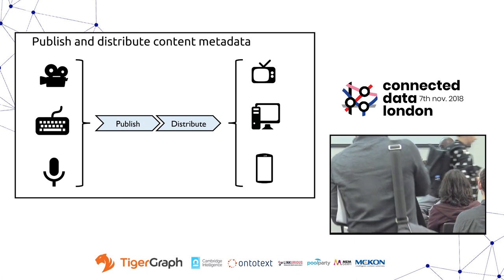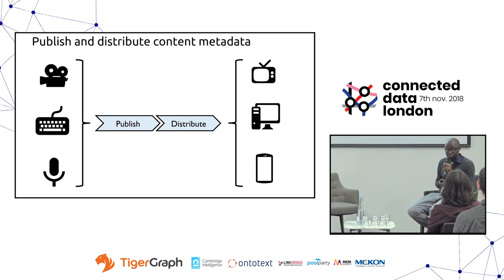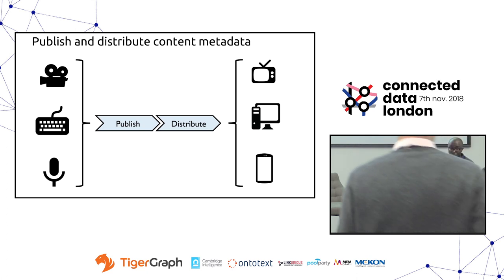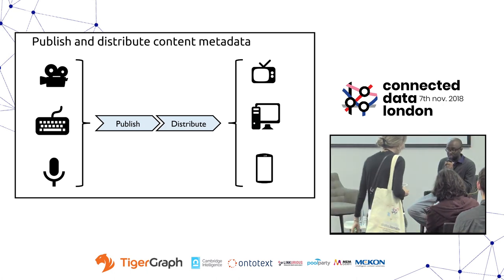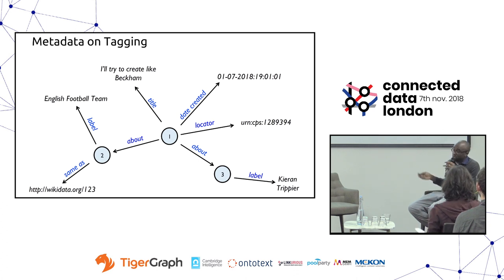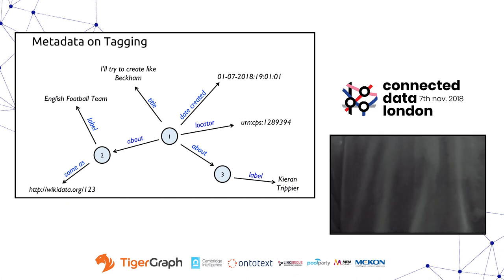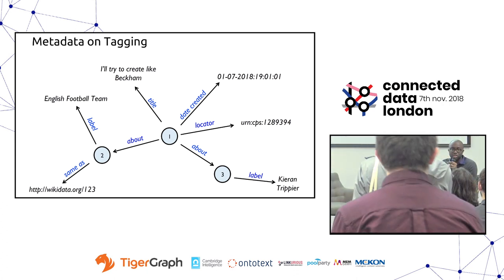Most of what I'll be talking about is internal — it's a closed system, mainly within the BBC. The team that I work with is involved in propagating some of this metadata, and we've been using a linked data solution, a triple store, for the last five to six years. The type of data we're particularly interested in relates to tagging BBC content — things like title, date created, and a locator within the BBC where you can fetch the actual content from.